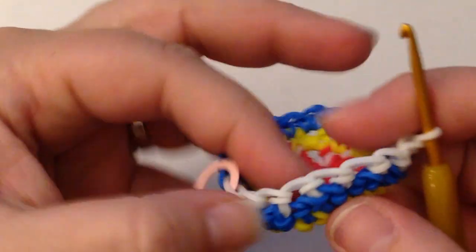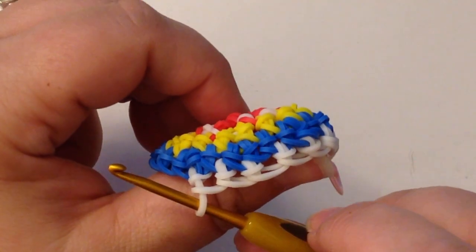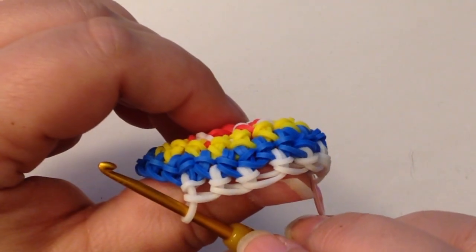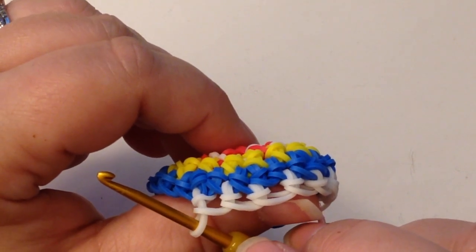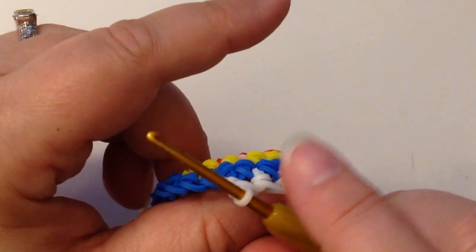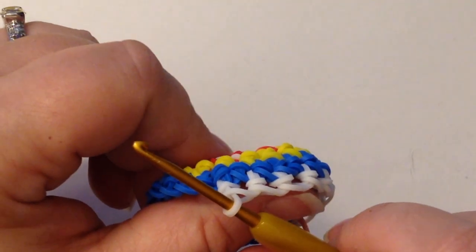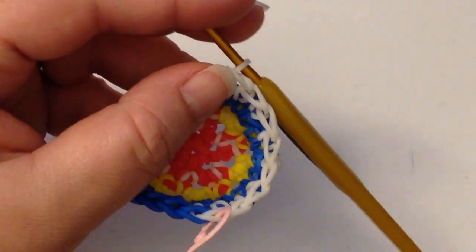Alright so let's practice, practice, practice that one. See how we do. That is the decrease, or in your patterns it will be a DEC for decrease, or two stitches together, 2 ST together TOG. Sometimes it will be written as that. So that's the decrease.